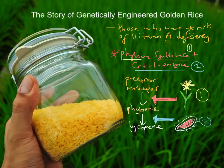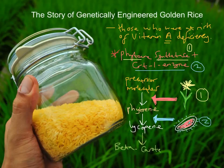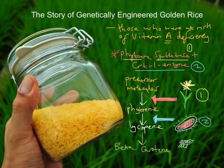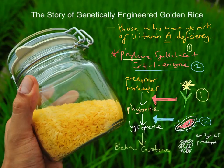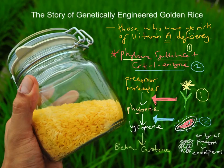Once we've got lycopene, we need to convert that into beta-carotene. The enzymes needed for this step are already present in the rice endosperm. Other enzymes in the endosperm convert the lycopene into the range of carotenoid molecules, including beta-carotene. So it's not just beta-carotene, but that is one of the molecules we get. With these two inserted enzymes, golden rice is able to produce beta-carotene.